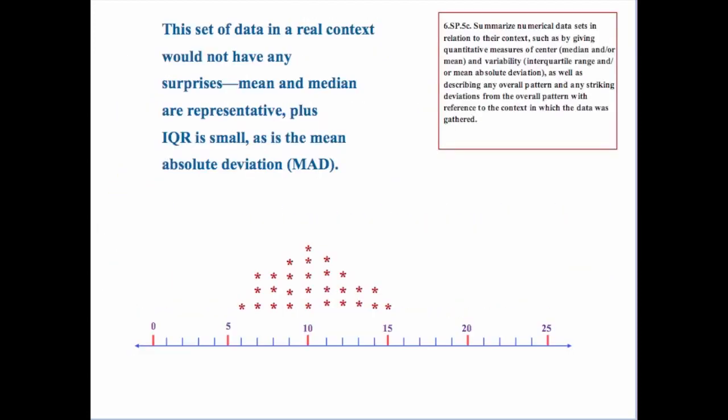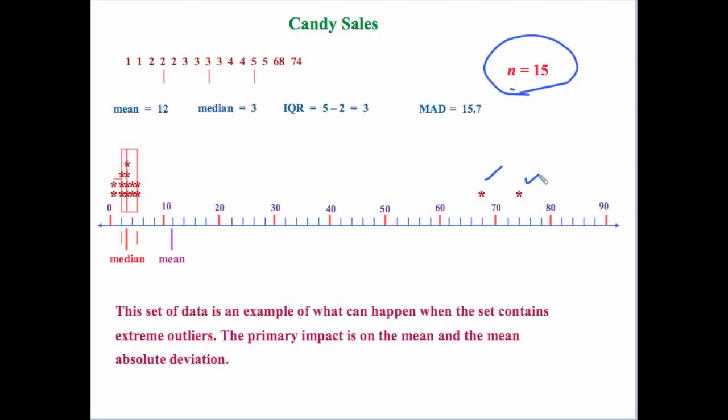Let's take another scenario — candy sales. Let's say you have 15 students that went out and sold a bunch of boxes of candy. Notice that almost all the kids sold anywhere from one to five boxes, but you've got two kids that were way out there — one sold 68 and another sold 74 boxes. This data set is an example of what can happen when a set of values contains extreme outliers.